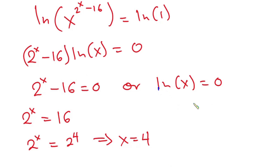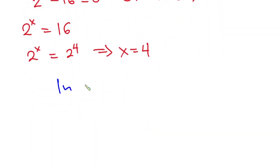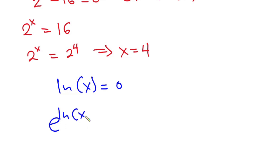Now considering the equation natural log of x equals zero, we raise e to both sides: e to the power natural log of x equals e to the power zero, so x is equal to e to the power zero, which is 1.